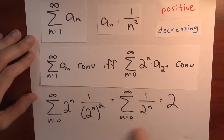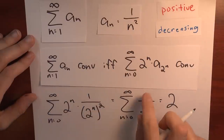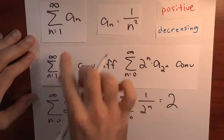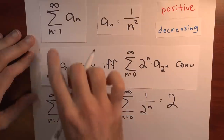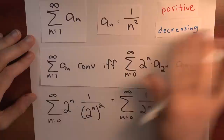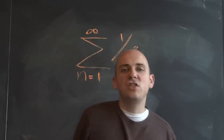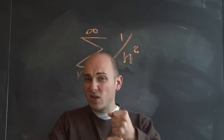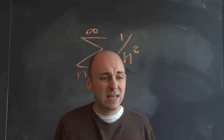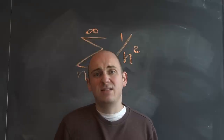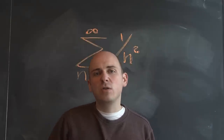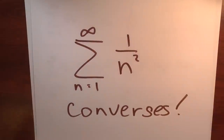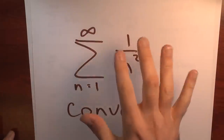Consequently, because the condensed series converges, so too must the original series: the sum of 1 over n squared, n from 1 to infinity, converges. So we've seen this series converges by comparing to a telescoping series and by using Cauchy condensation. There are other ways — we could also have used the integral test. We're seeing many different methods to prove the same result.